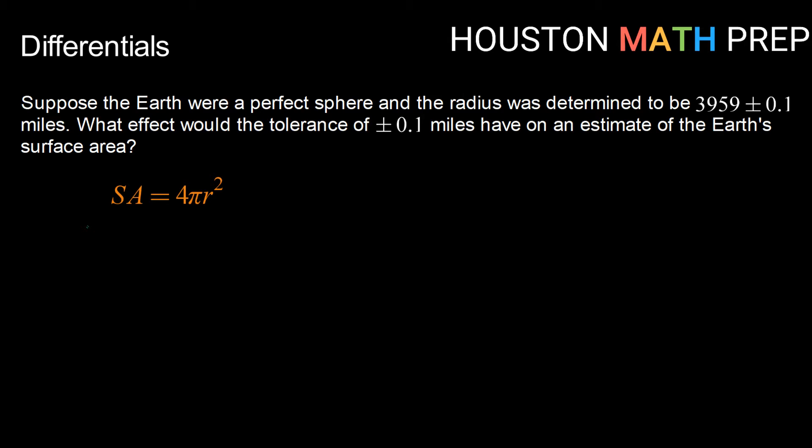Suppose that we were saying the earth was a perfect sphere and we were estimating that the radius of the earth was about 3959 miles, give or take a tenth of a mile. What effect would that tolerance of plus or minus 0.1 miles have on an estimate if we were trying to estimate the earth's surface area? Using the earth as a perfect sphere, our surface area for a sphere formula is 4πr².